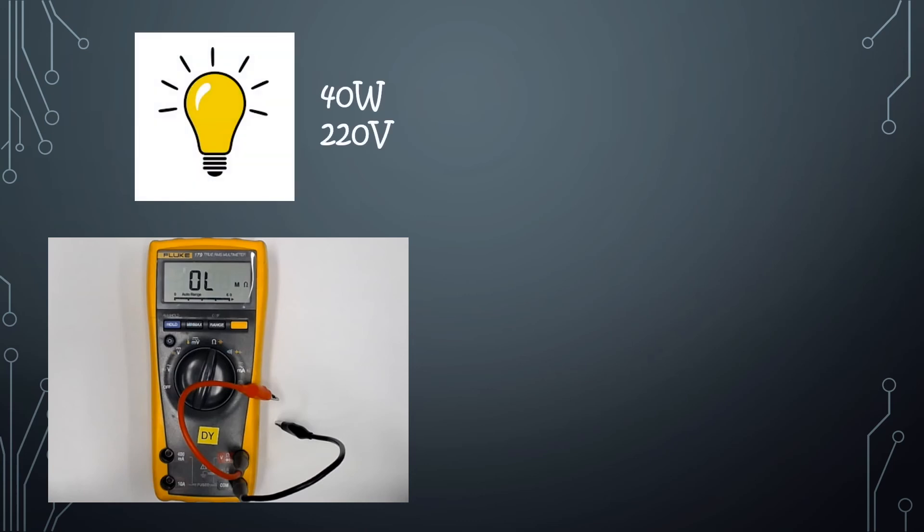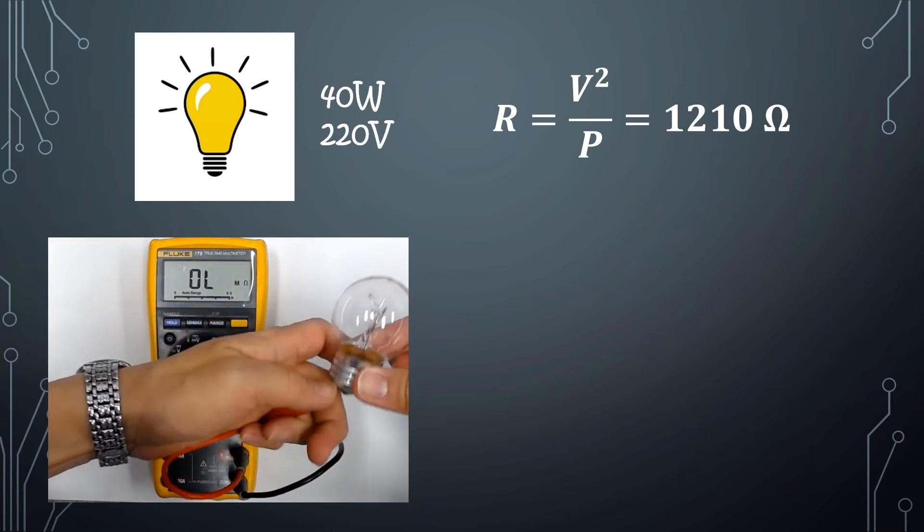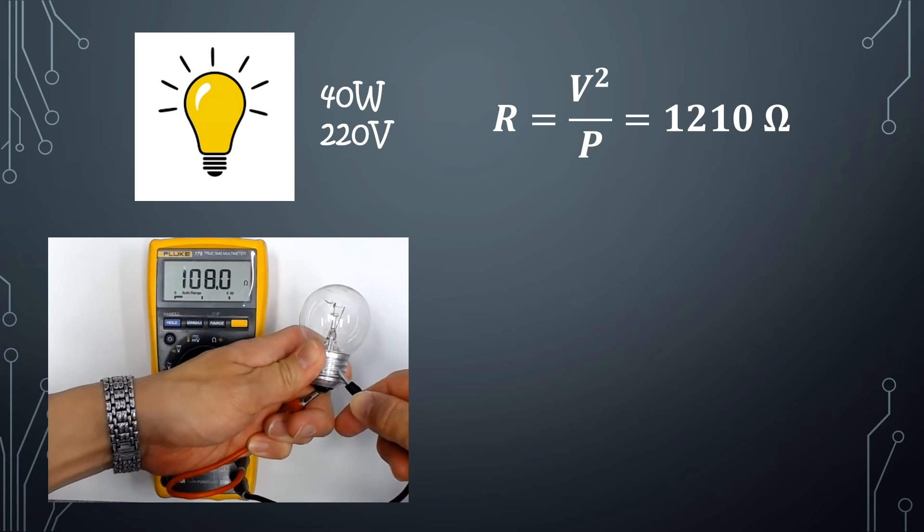The temperature effect also explains why, if you have a 40-watt, 220-volt incandescent light bulb, the calculated resistance of it is 1210 ohms. But if you actually measure the resistance of it with a multimeter, its resistance is only about 108 ohms.